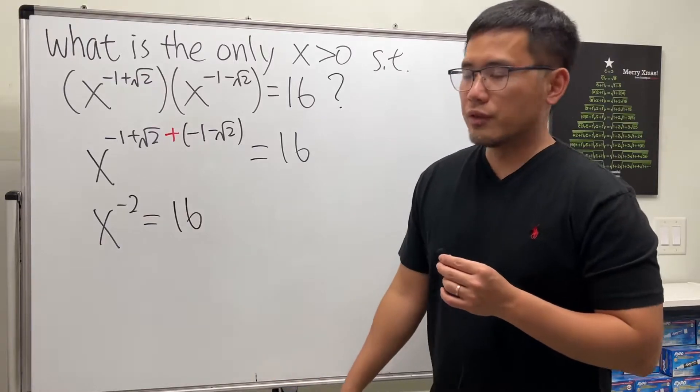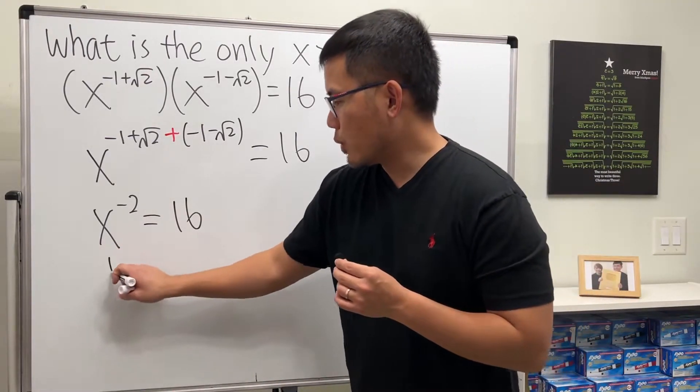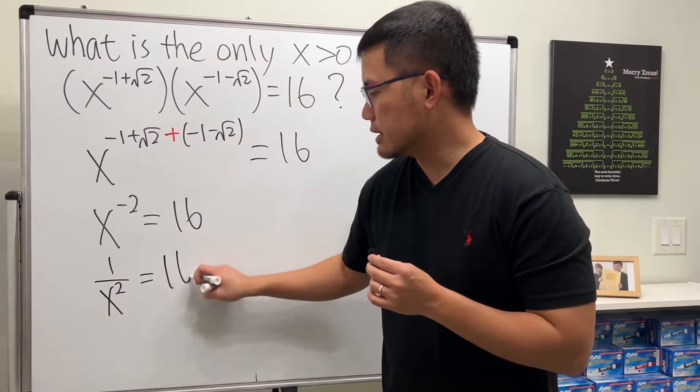Now it depends on how you want to solve it. You can write this as 1 over x squared equals 16.